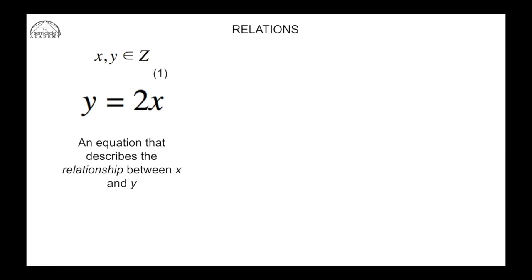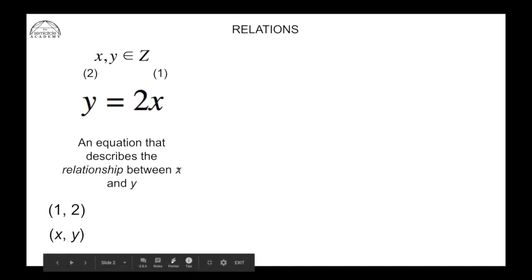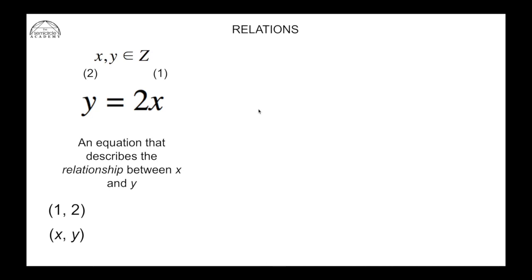We can see this quite easily: if we input x = 1, then y = 2 × 1 = 2. So this relationship shows that y is two times greater than x. We can write this with the input x value and the output y value, and this is what we see as a coordinate in coordinate geometry — the x value first, a comma, then the y value. Written this way, it is called an ordered pair.